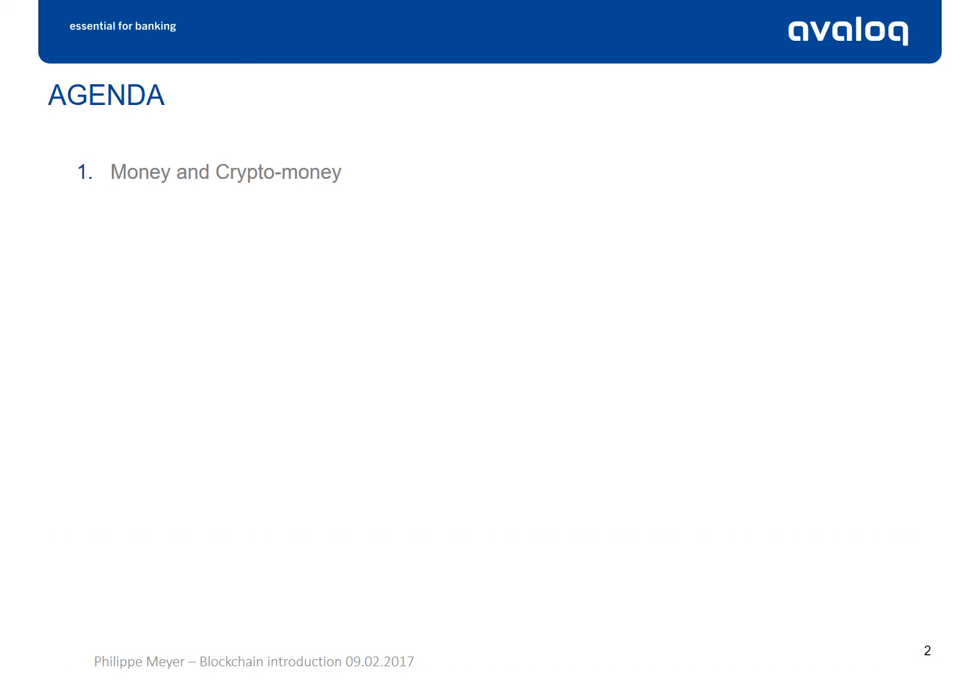In the first part of this presentation, we have understood the characteristics of money and crypto-money and the differences between the two. We have been through an overview of Bitcoin, understanding the main features of this crypto-money and the characteristics of blockchain, bitcoins, and underlying infrastructure. We will today focus on what is called blockchain v2, also called smart contracts.